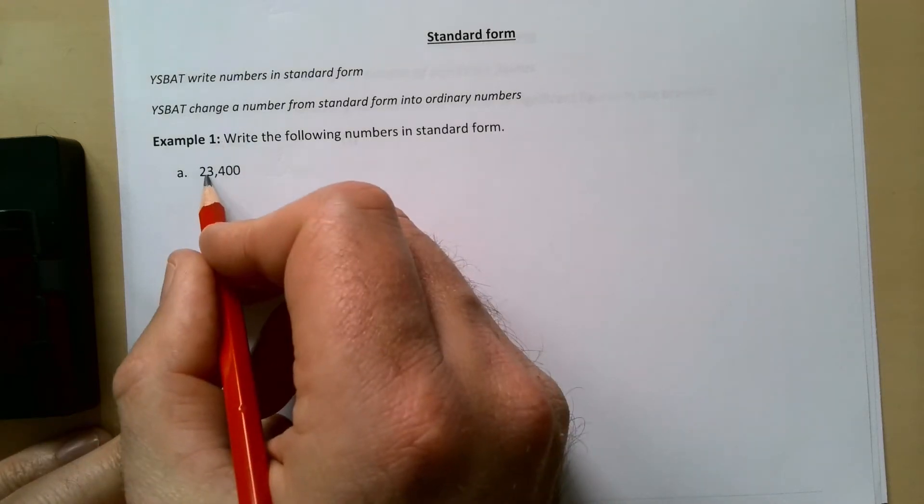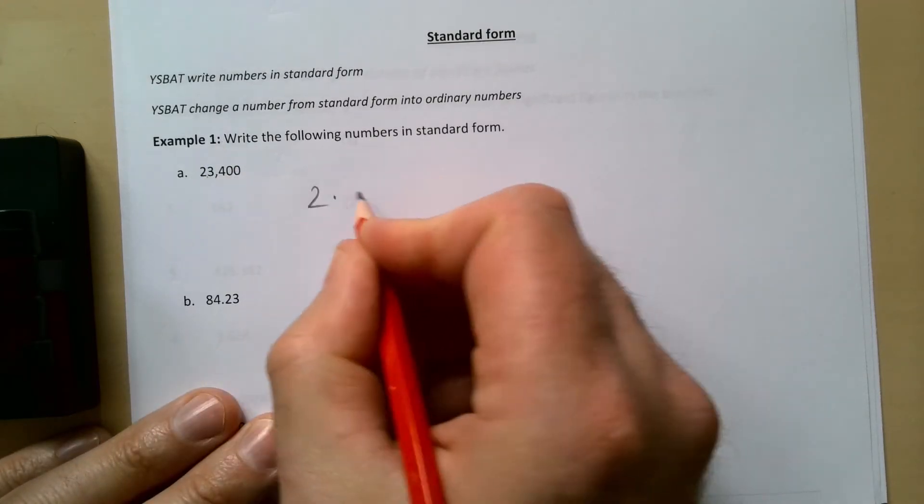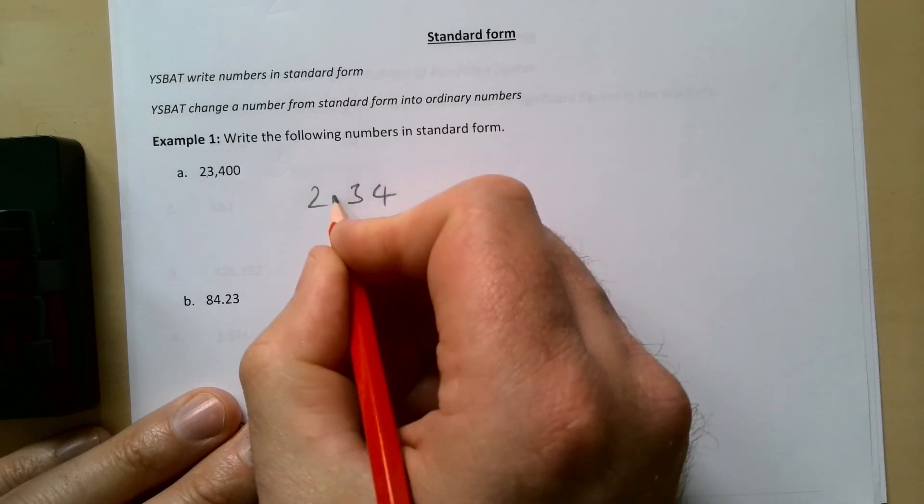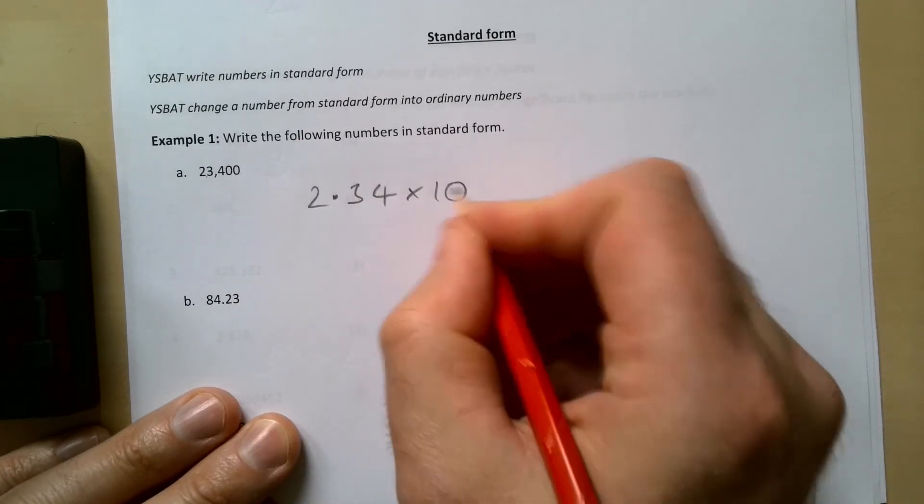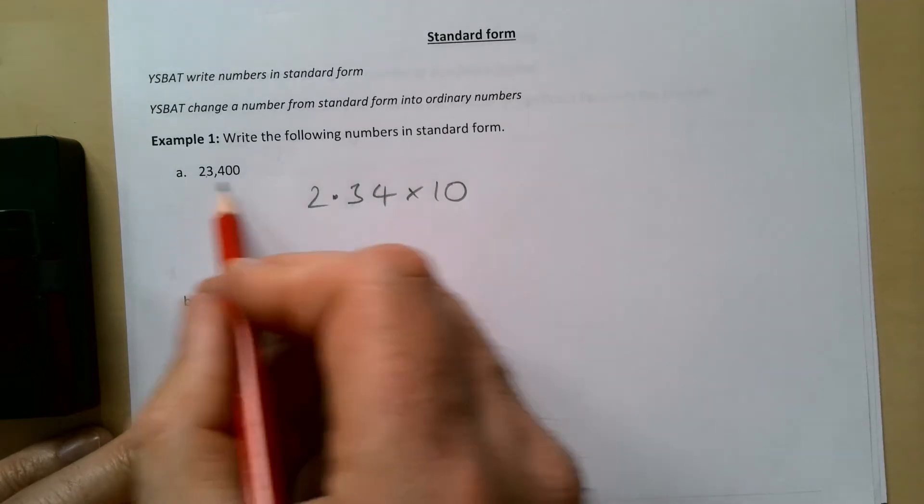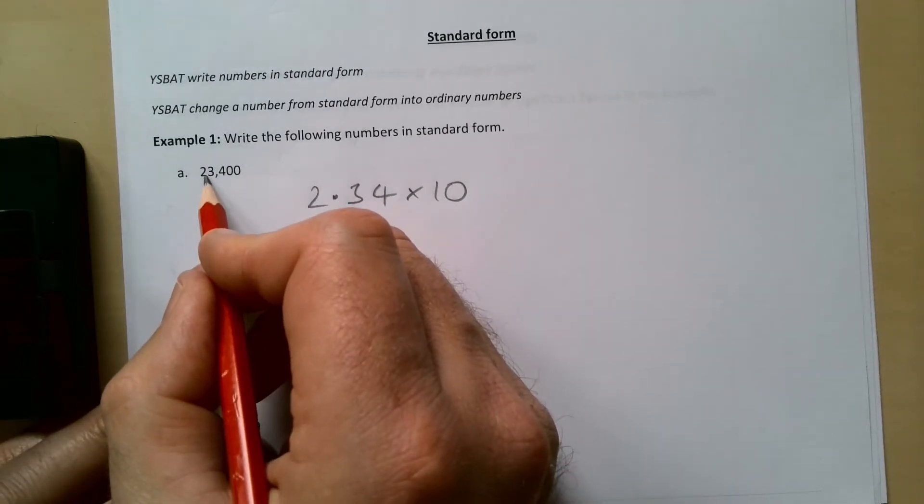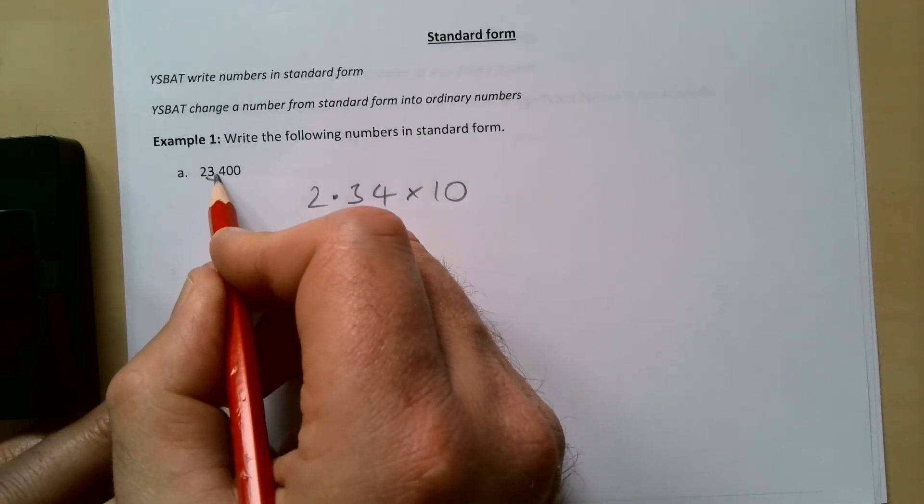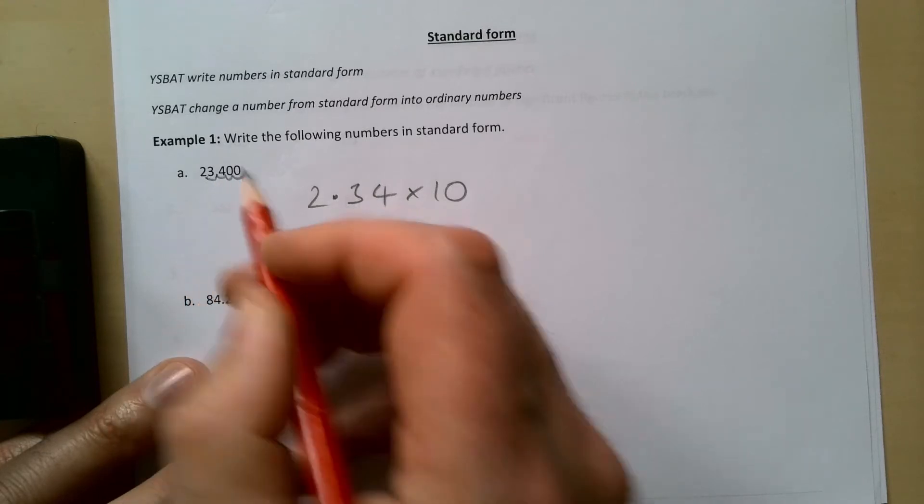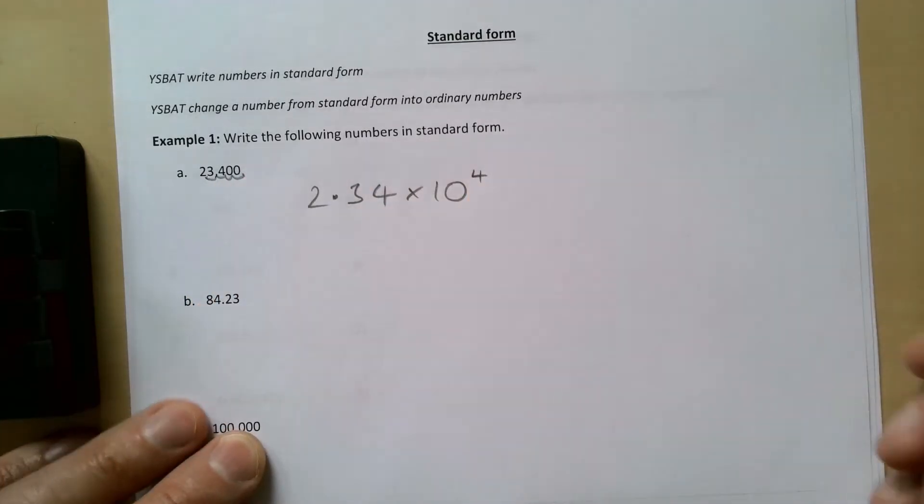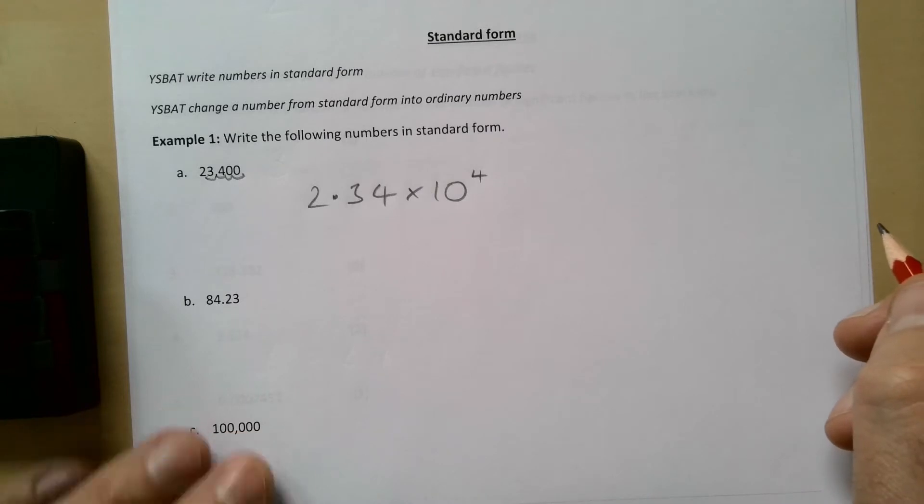So where can we put our decimal point? It's going to be 2.34, and then that's times 10. How far has the number moved? The decimal point has gone 1, 2, 3, 4 places, so it'll be 2.34 × 10 to the power of 4.